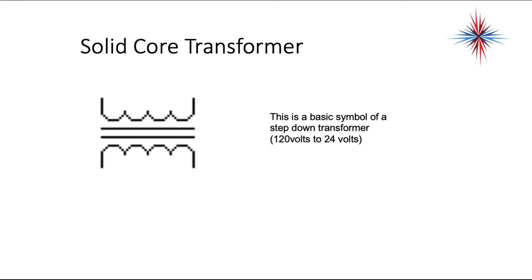This is the basic symbol of a step down transformer. 120 volts to 24 volts, 240 volts to 24 volts. It's a solid core transformer. One of these sides will be your line in neutral or L1, L2, and the other side will be your secondary winding, which would be a 24 volt. These are normally labeled properly and shown in the schematic to what voltage is on each side.